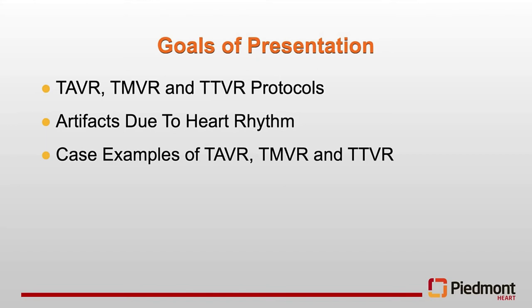Transcatheter therapy interventions have been growing rapidly, and with it, the need for accurate planning of these procedures has become very important. Transcatheter therapy for the aortic valve is standard of care in low, intermediate, and high-risk patients. CTA plays a fundamental role in complete pre-procedural planning because it has the highest spatial resolution with isotropic imaging to assess the aortic root, mitral complex, or tricuspid valve. Gating for cardiac rhythm and improvements in temporal resolution have tremendously helped in this field.